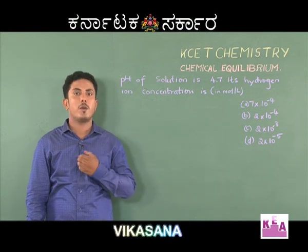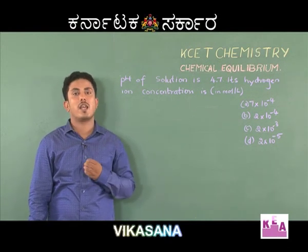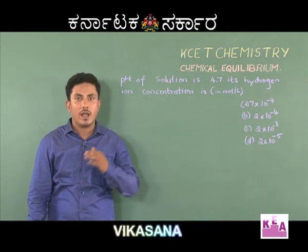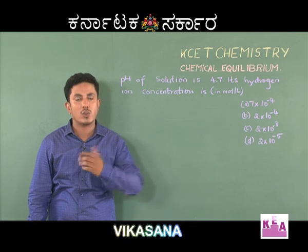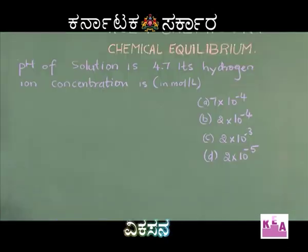Students, in the previous problem, H⁺ ion and OH⁻ ion were given and we had to calculate the pH of the solution. But this problem is related: pH of a solution is given and we are asked to calculate the H⁺ ion concentration.